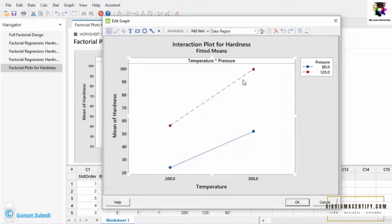So we see that these lines are not crossing each other. So over the given range of temperature, there is no interaction of the temperature and pressure on the hardness of the plastic.